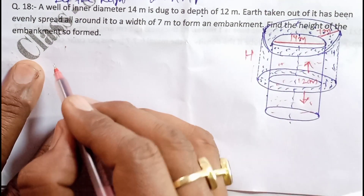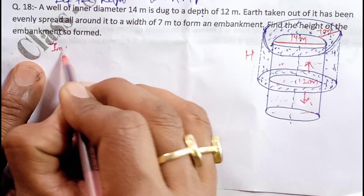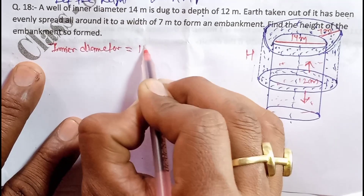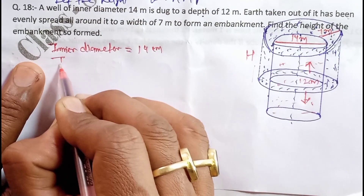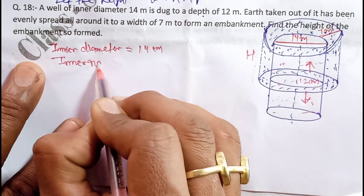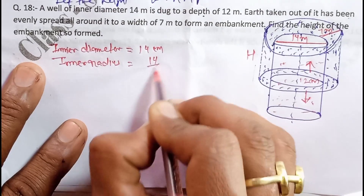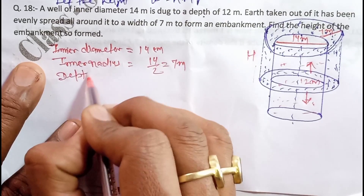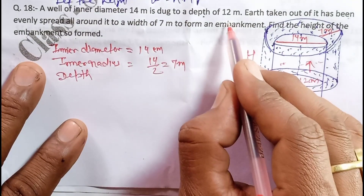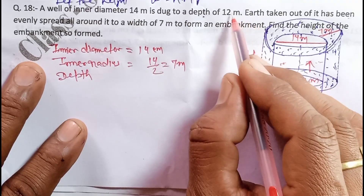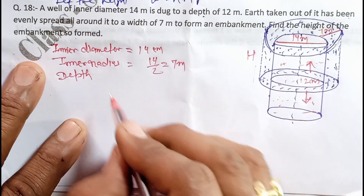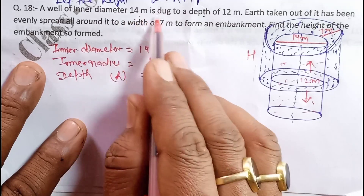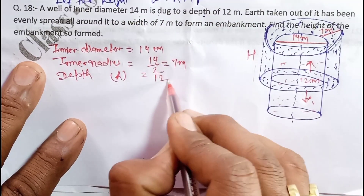Note here: inner diameter is equal to 14 meters, then inner radius = d/2 = 7 meters. The depth of the well is 12 meters — so we take height h = 12 meters. The well is dug to a depth of 12 meters, so depth = 12 meters.